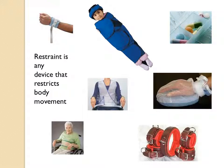This shows a variety of restraints available, and it's certainly not all of them. In the upper left we have the soft wrist restraint. In the upper middle is the papoose board. In the upper right we have chemical restraints. In the middle we have a vest restraint and a mitten in the right middle. In the lower left is another type of chair restraint, and then you have your five-point leather restraints.